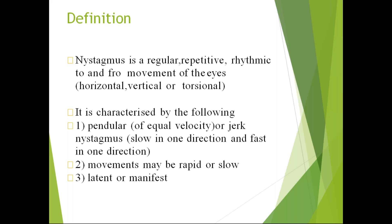In jerk nystagmus, one direction of movement will be slow and the second movement will be fast. It goes in a slow movement in one direction and comes back in a fast movement. In pendular movement, both movements will be of equal velocity and amplitude.